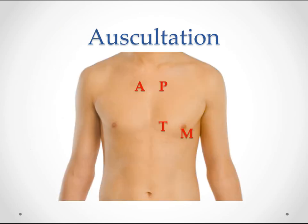When somebody comes into the office and we do a physical exam, we auscultate at the four traditional points for auscultation of the heart. On the right side, below the second rib, right next to the sternum, we have the aortic valve listening post. Just across from that we have pulmonic. And then down under the fifth rib, next to the sternum on the left, you have the tricuspid valve listening post. Also underneath the fifth rib, but closer to the nipple — some people say midclavicular line — you have the mitral valve listening post.